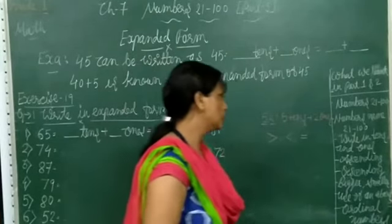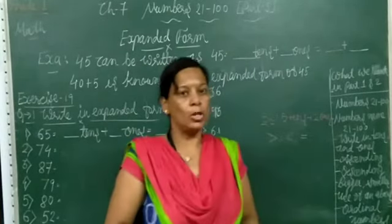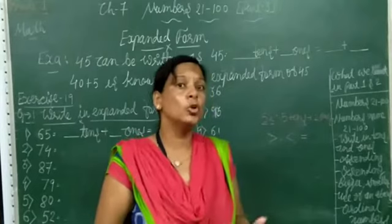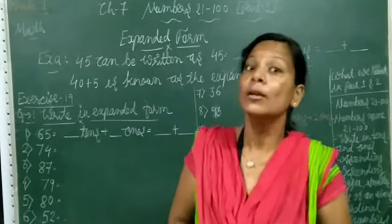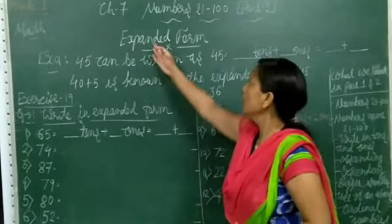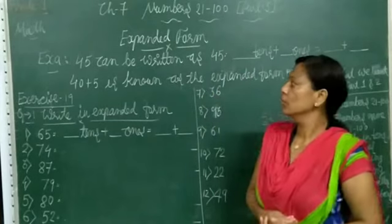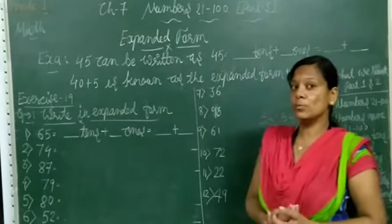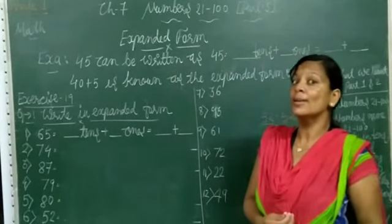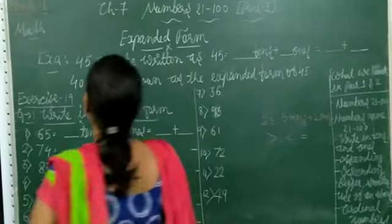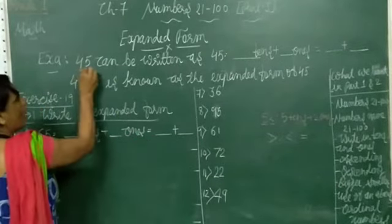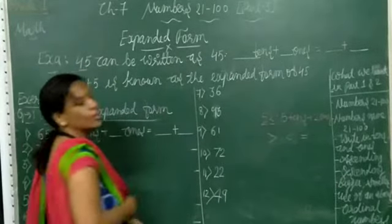An ordinal number also — an ordinal number shows position or a rank. Now today we are going to learn expanded form. So what is expanded form? Expanded form kya hota? See the example. First, 45 can be written as.